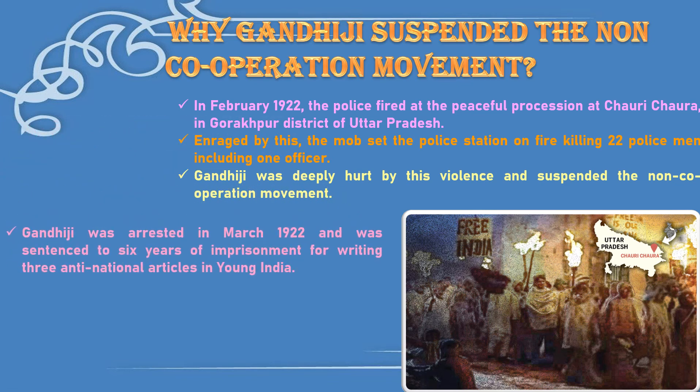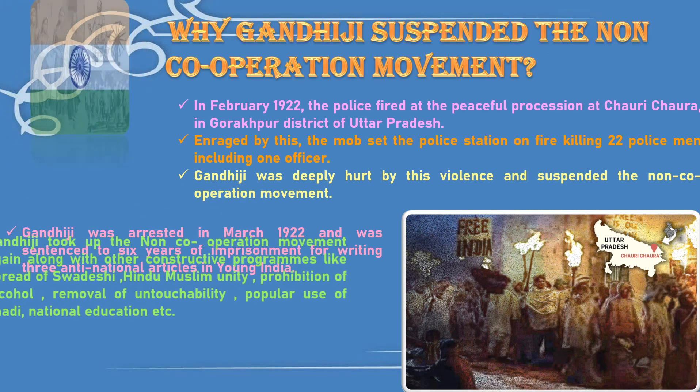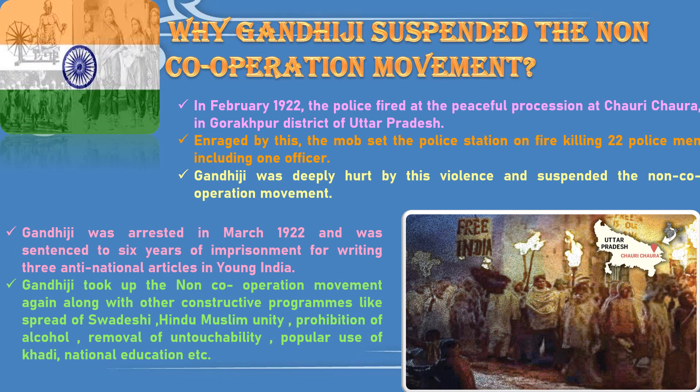Later, Gandhiji was arrested in March 1922 and sentenced to six years of imprisonment for writing three anti-national articles in Young India. But he was released early on grounds of ill health. After his release, he again took up constructive programs including the spread of Swadeshi, Hindu-Muslim unity, prohibition of alcohol, removal of untouchability, popular use of khadi, and national education.